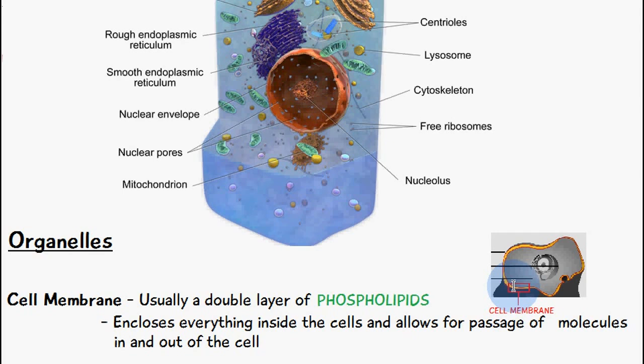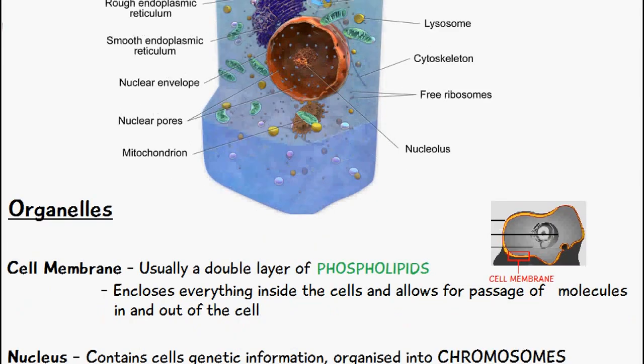The cell membrane is usually dotted with membrane proteins which allow for the passage of molecules to move either in and out of the cell. There are quite a few videos I've done previously on the types of transport to go inside and outside of the cell, so check my previous videos if you're confused about that.